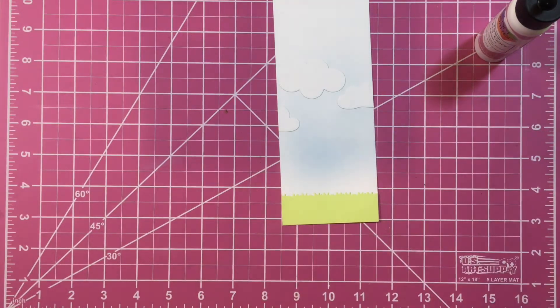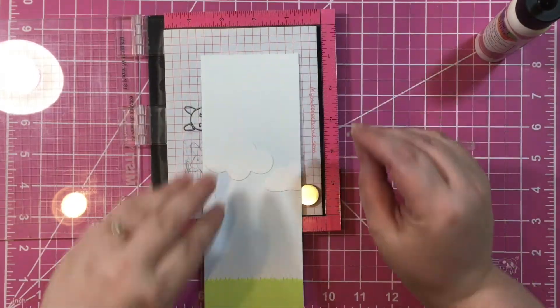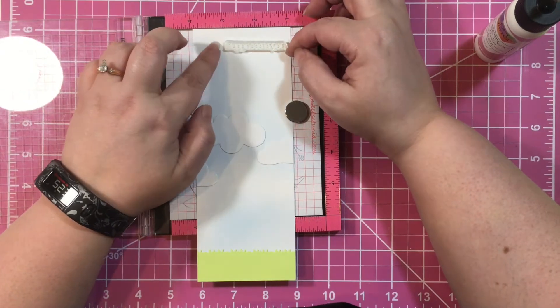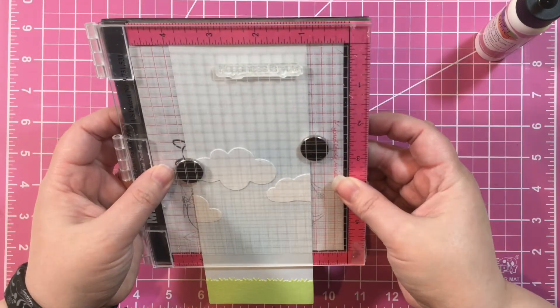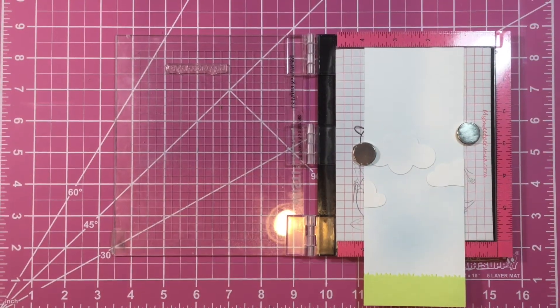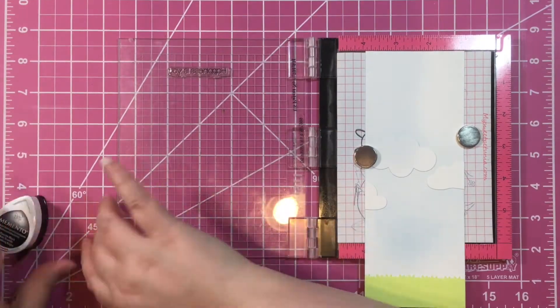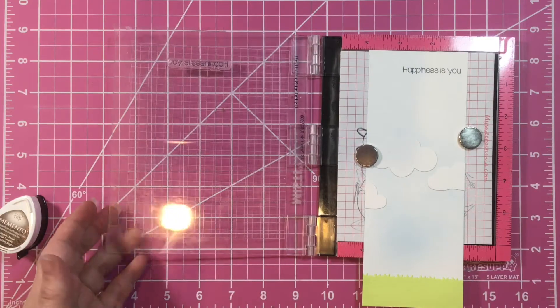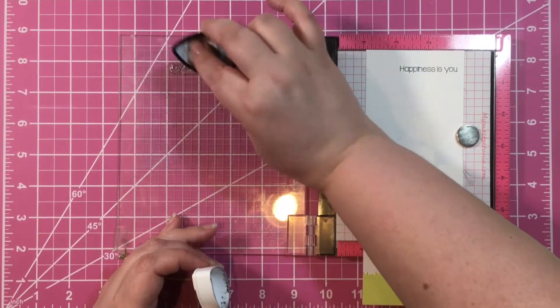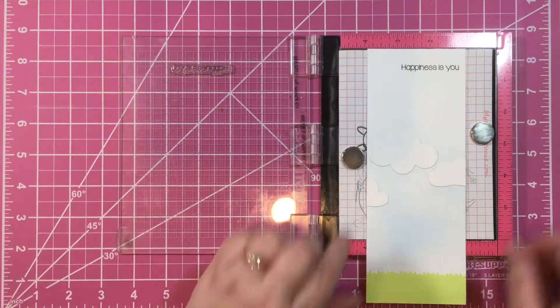The sentiment I'm using is from our Spring Thing stamp set and it says 'happiness is you.' I thought this went perfectly with the little boy with the tulips. I used my MISTI to position it correctly and then used memento tuxedo black ink to stamp it on. I stamped it twice because I wanted it just a little bit darker.